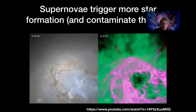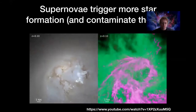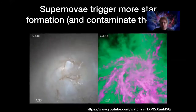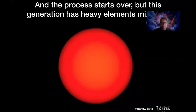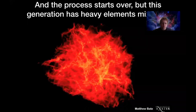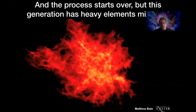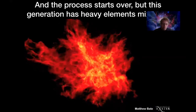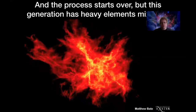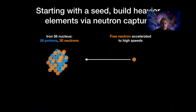These heavy elements get dispersed in the explosion and mixed in with the rest of the gas, which then triggers new star formation as the shock wave passes through. Once you have that new star formation, the gas is no longer pristine — in addition to hydrogen and helium, it now contains iron and other heavy elements. Today we're going to think about what happens if you have a star that already has iron in it and what happens during its late stages of evolution.